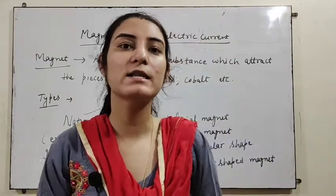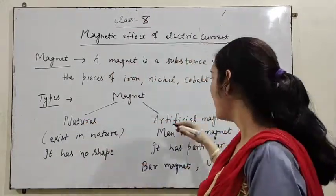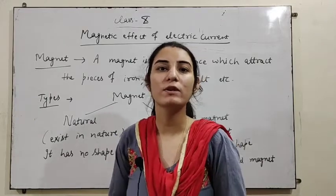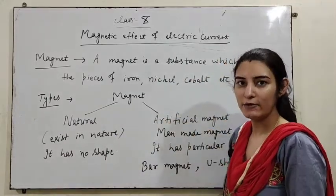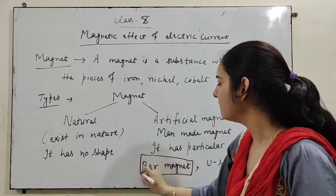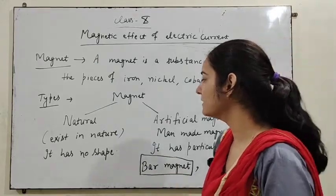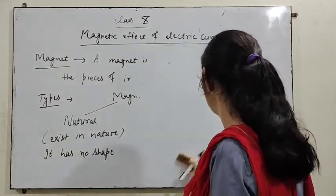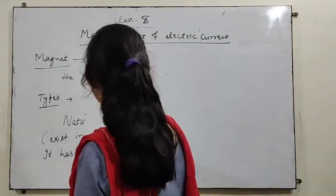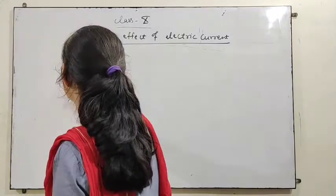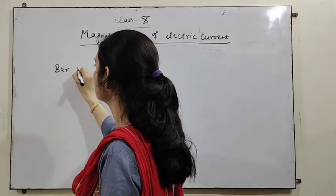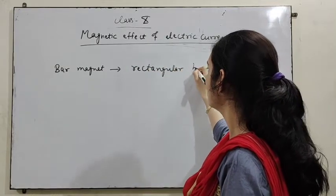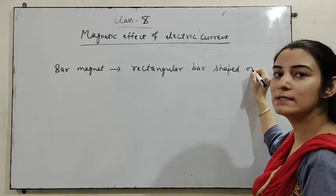We mostly use artificial magnets instead of natural magnets because we can increase the magnetic field according to our need in the case of artificial magnets. But the magnetic field cannot be changed in the case of a natural magnet. The most common artificial magnet is the bar magnet, which is a magnet in the form of a rectangular bar.